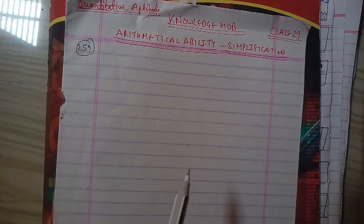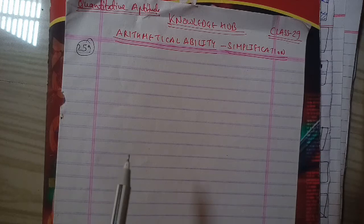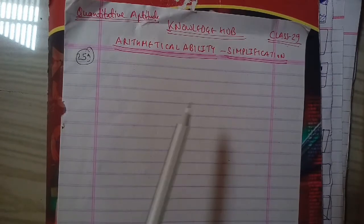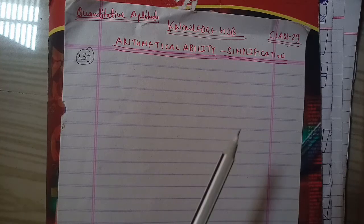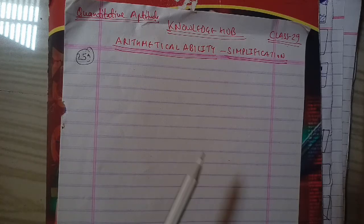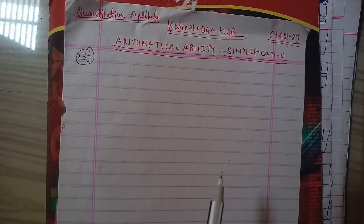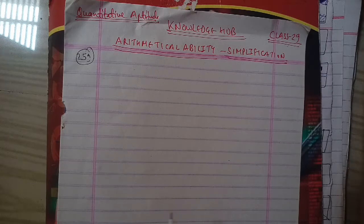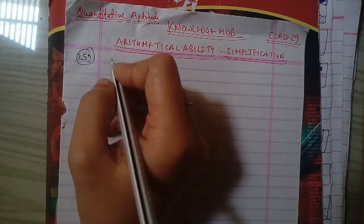The first question for this session: a classroom has an equal number of boys and girls. Eight girls left to play kho-kho, leaving twice as many boys as girls in the class. What was the total number of girls and boys present initially? Options: 16, 24, 30, cannot be determined, or none of these.